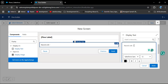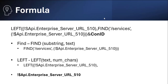Let me explain the dynamic link formula by navigating to the PowerPoint. The formula uses a LEFT function and a FIND function, along with the con_id variable we created to store the contact record ID. The FIND function has two parameters: substring and text. It finds a value within the text — for example, given the string 'a b c d e' and looking for 'c', FIND returns the position of 'c'. In this formula, the text parameter is the global API variable `$Api.Enterprise_Server_URL_510`.